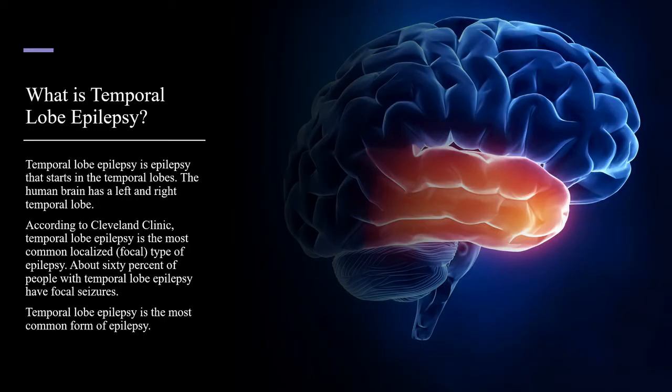Temporal lobe epilepsy is epilepsy that starts at the temporal lobes. The human brain has a left and right temporal lobe. According to Cleveland Clinic, temporal lobe epilepsy is the most common localized or focal type of epilepsy. About 60% of people with temporal lobe epilepsy have focal seizures, making it the most common form of epilepsy.